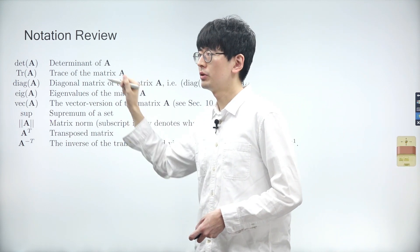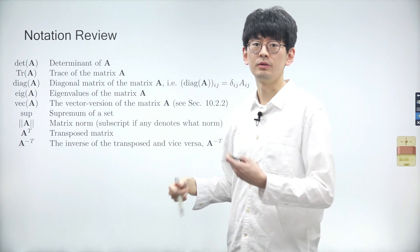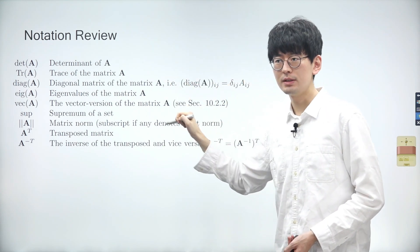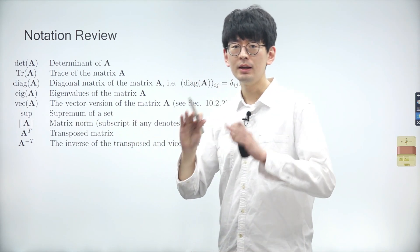There are different types of norms. For example, some might return a vector comprising the largest value from each column. However, for this course, when we determine a matrix norm, it refers to the largest value in the matrix.